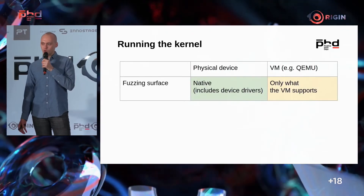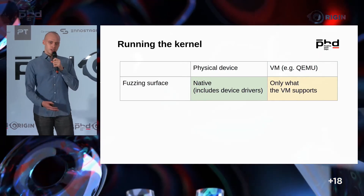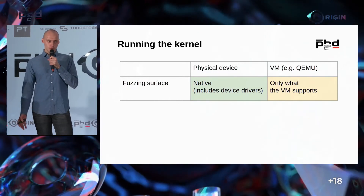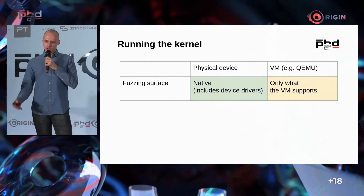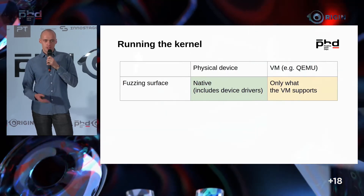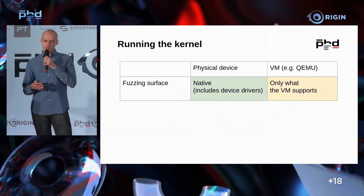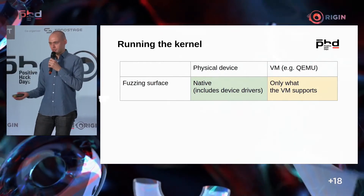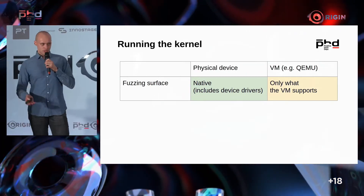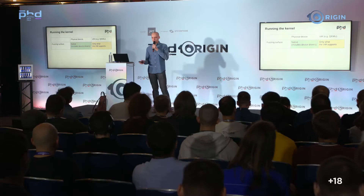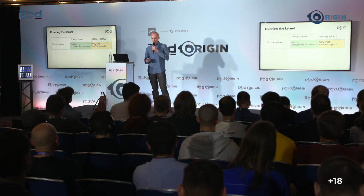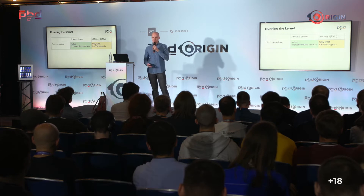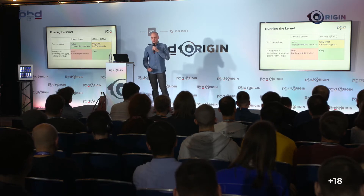Each approach has pros and cons. Regarding which parts of the kernel can be covered with fuzzing, hardware wins a bit because hardware executes drivers and has all the chips. But the problem with VMs is that if a VM doesn't emulate some device, you can't fuzz its driver. For management and automation, VMs win by a large margin because it's easier to collect logs for them.